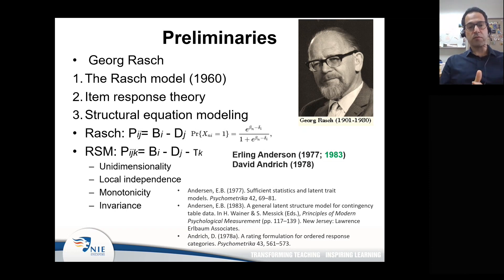The model we're going to focus on was developed around 1977, 1978. First, Erling Anderson provided a representation of something very similar to the rating scale model, and then David Andrich was the person who came up with the model itself. These are some of the references. If anyone is interested to read more about these models and the mathematical underpinnings, those references are highly recommended.